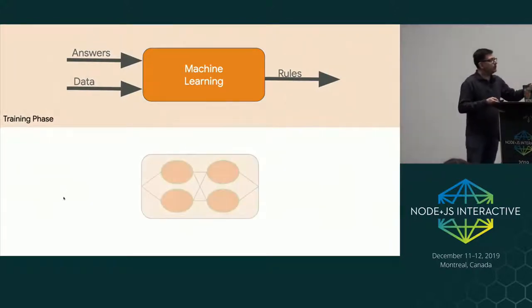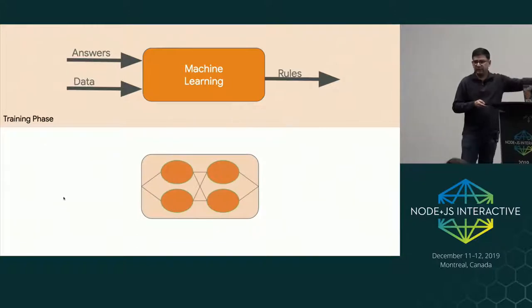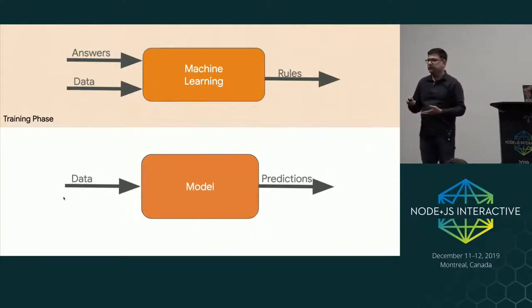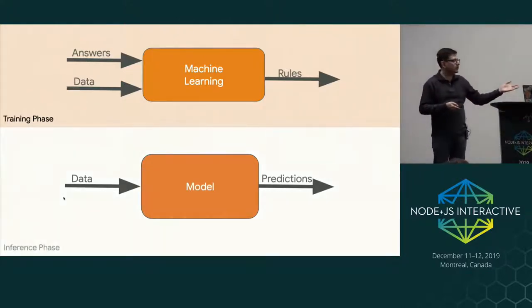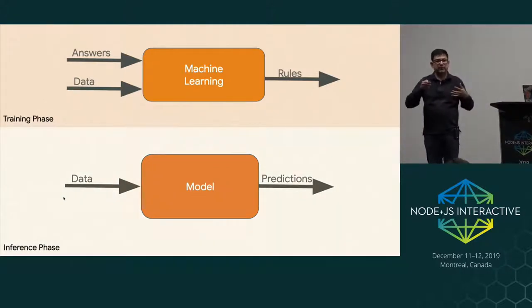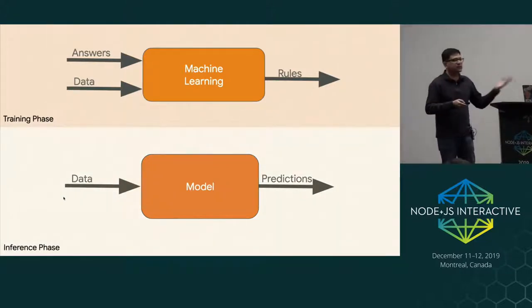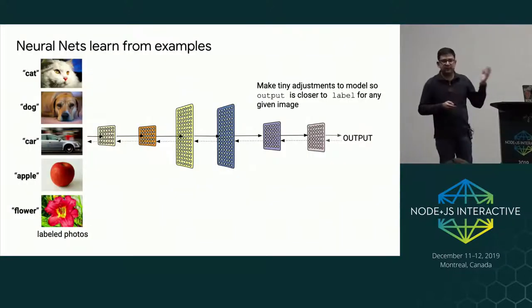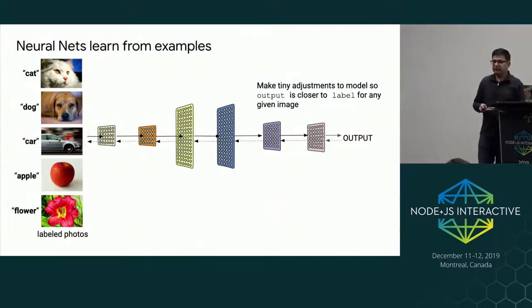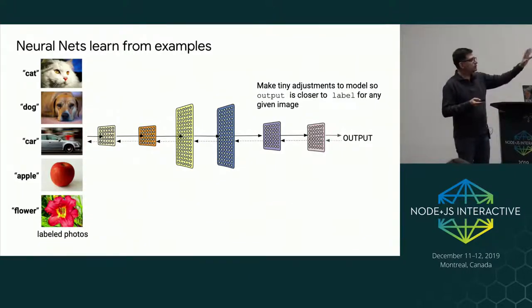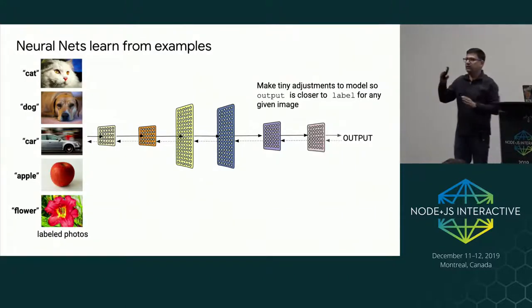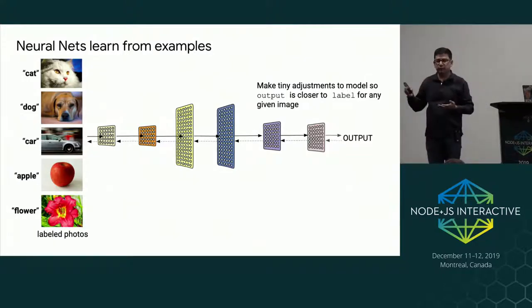Once you have trained a model — which is some representation of the model — you can feed new data into it and that model is ready to give you new answers or predictions. This is called the inference phase. At a high level conceptually, this is how a machine learning approach to solving a problem looks. Just to look at this visually: let's say you're trying to classify images. A model is a collection of layers, and all these layers are just computational blocks.